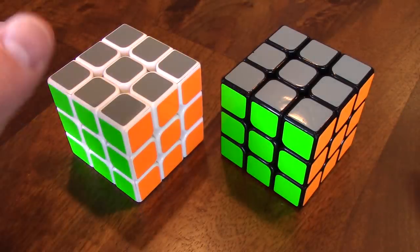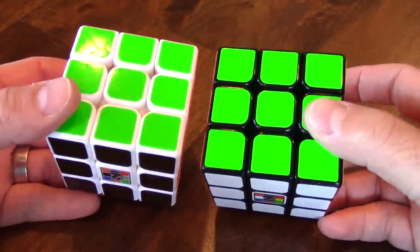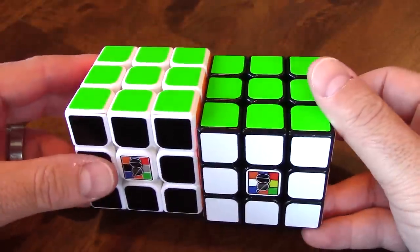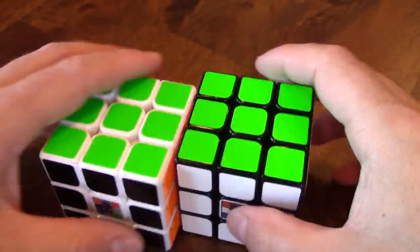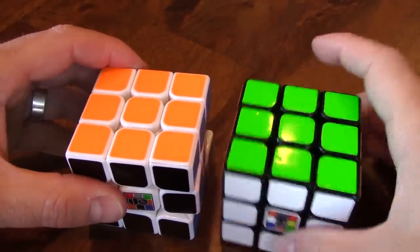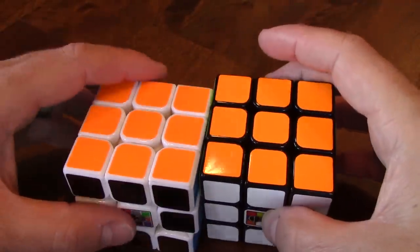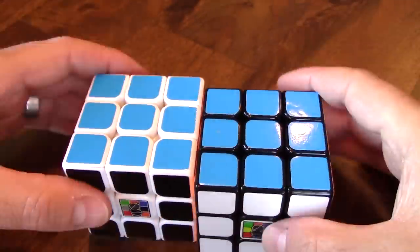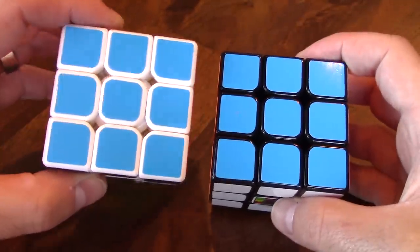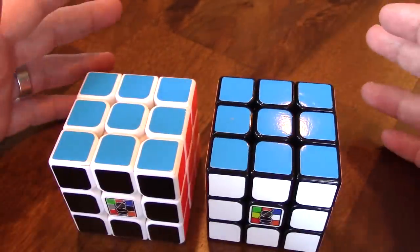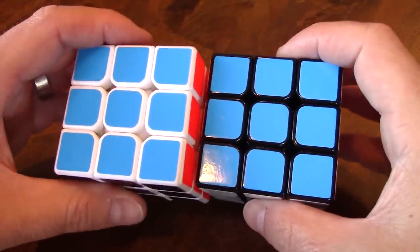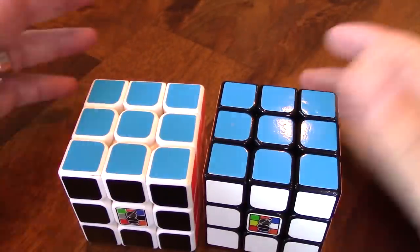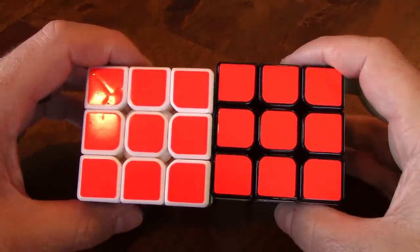And through the magic of editing, here we are with the final fully stickered cubes. Just to go over the shades once again, that is fluorescent green, fluorescent orange, ocean blue. This was the face that I spent a lot of time trying to find the right color for. And after really spending a lot of time on it, I think ocean blue is what I would call fluorescent blue. And it matches the bright sets the best. So ocean blue and fluorescent red.